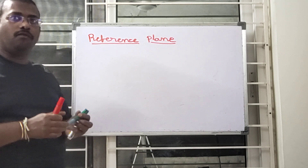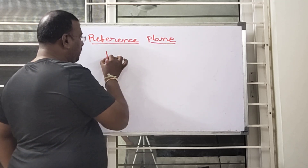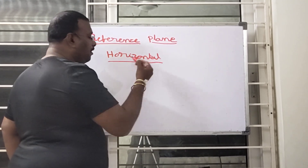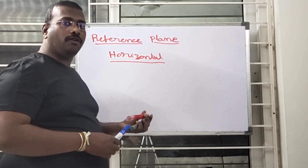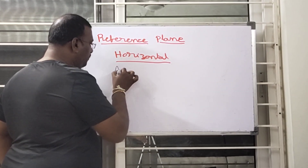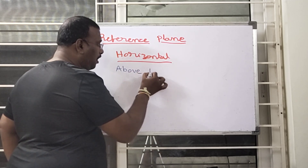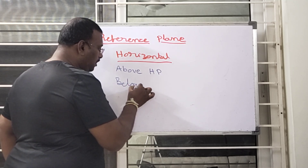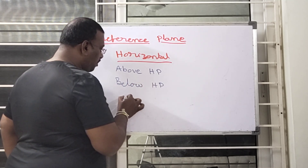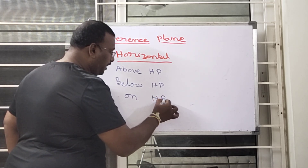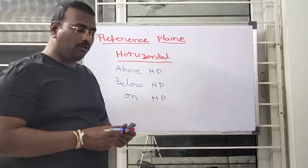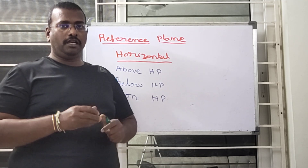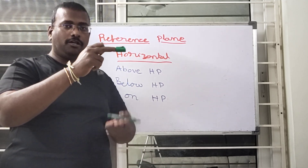So with respect to the horizontal plane, the information we can give about a point's position is whether it is above HP, below HP, or on HP — these are the three possibilities. In the previous case, we described a point's position with respect to the floor and the wall.